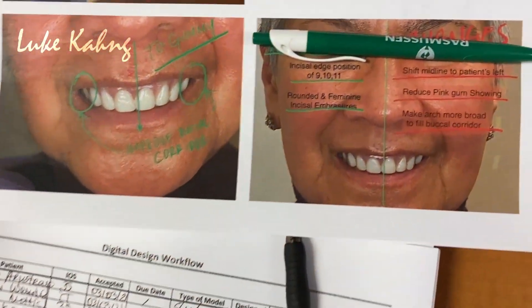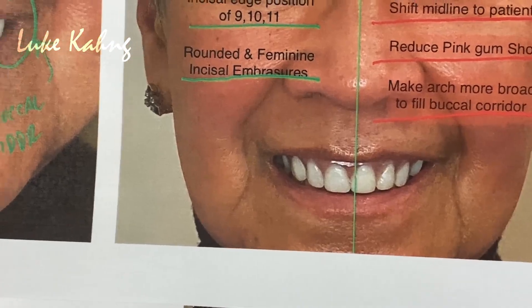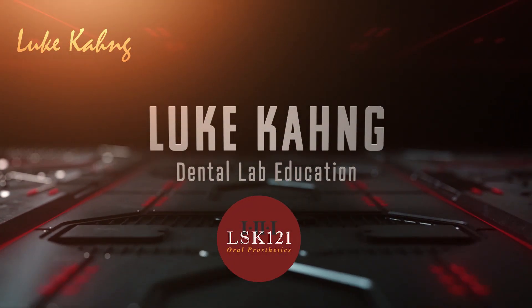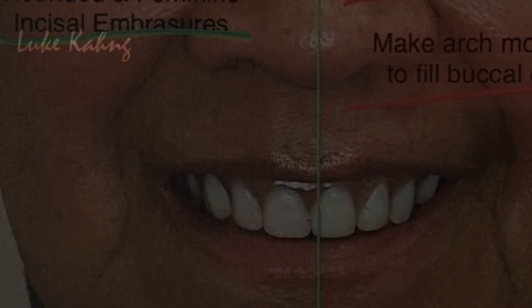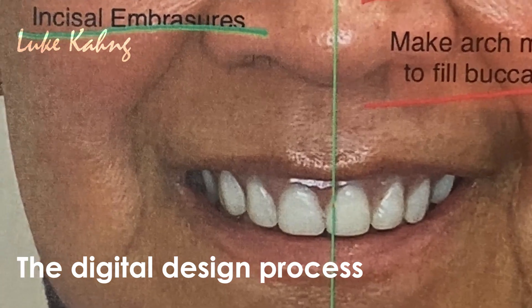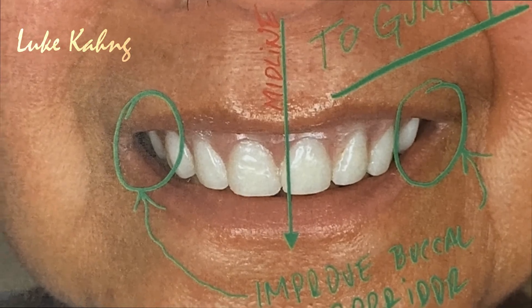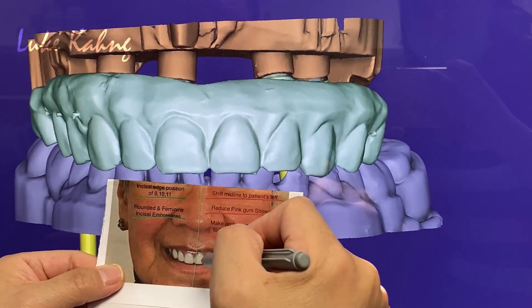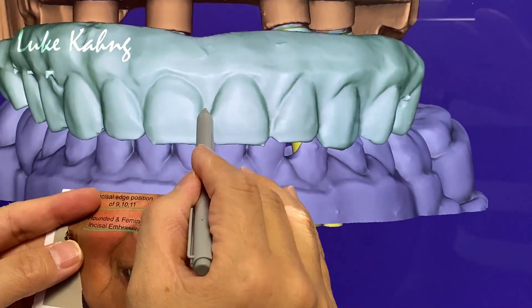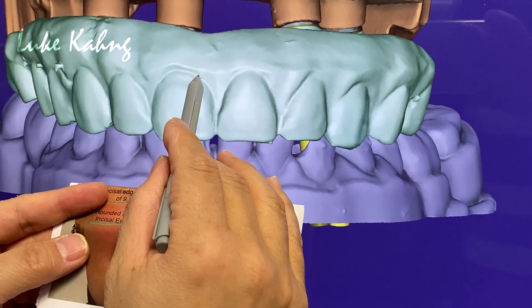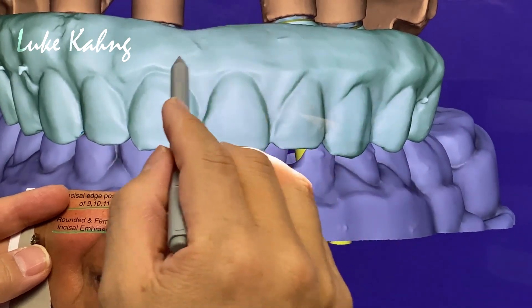So we got the good information from this — we have to follow what we like and don't like. First, we change the midline, just like the doctor prepared it, about the size of the tooth. So we change everything here and then make two gummy smiles — reduce gummy showing.